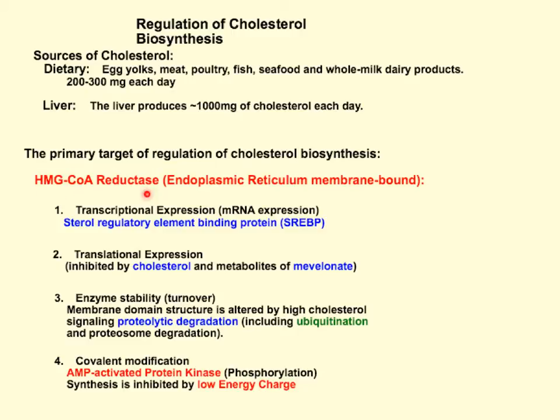HMG-CoA reductase is the primary enzyme that controls the production of cholesterol. It can be controlled at the transcriptional and translational levels, at the enzyme stability level, and by covalent modifications.